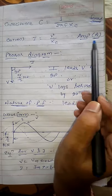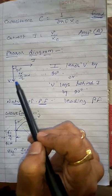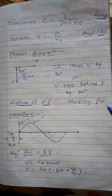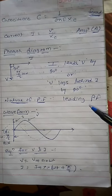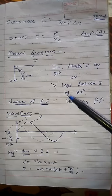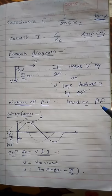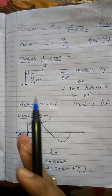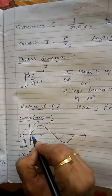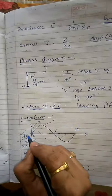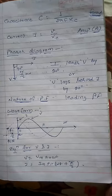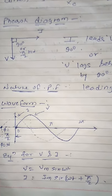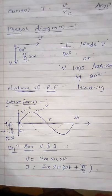Current I is equal to V divided by XC, and its unit is ampere. For the phasor diagram of a pure capacitive circuit: current leads the voltage by 90 degrees. Because in a pure capacitive circuit, current leads voltage by 90 degrees, the nature of power factor is leading power factor. For the waveform, the current waveform is drawn with respect to the voltage waveform — since current is leading, it starts ahead of the voltage waveform's origin.